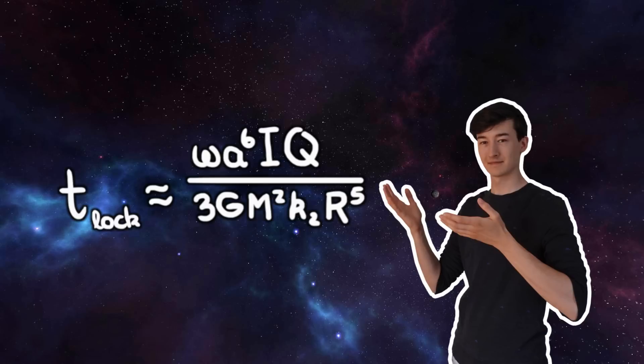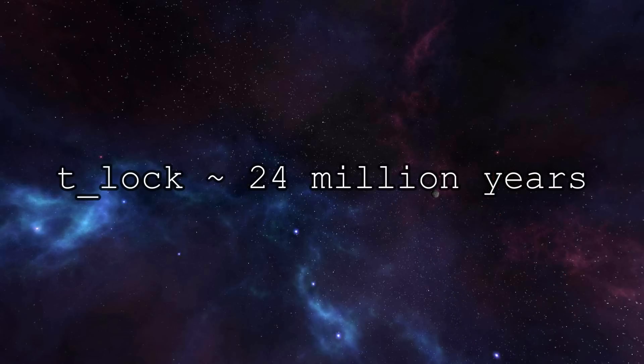So what about the moon? This timescale should be a lot smaller than 5 billion years, right? Because it is tidally locked. If we use this equation for the moon, we get values of a couple tens of millions of years. So the moon has had plenty of time to get locked. And the same goes for most major moons in the solar system.